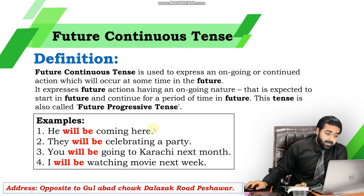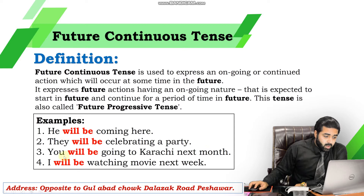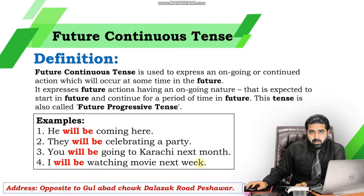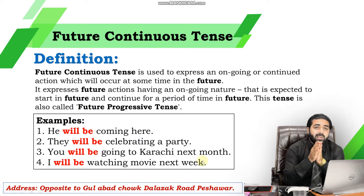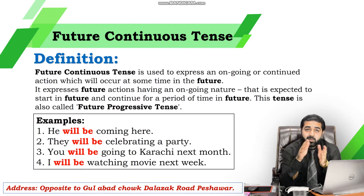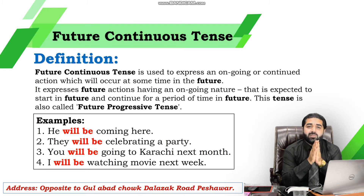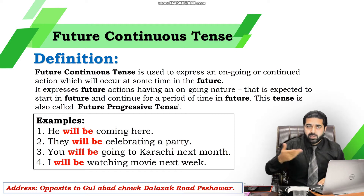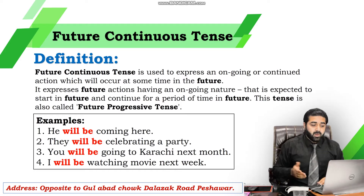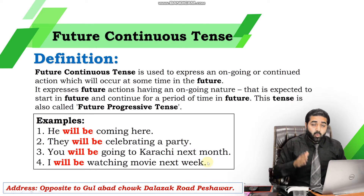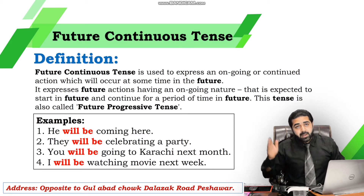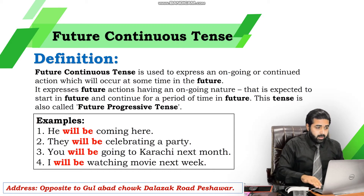Examples: He will be coming here. They will be celebrating a party. You will be going to crash next month. I will be watching a movie next week. Focus on the last example: 'I will be watching a movie next week' — it means this action is happening next week and will continue for some time. The action will continue, that is the key idea.